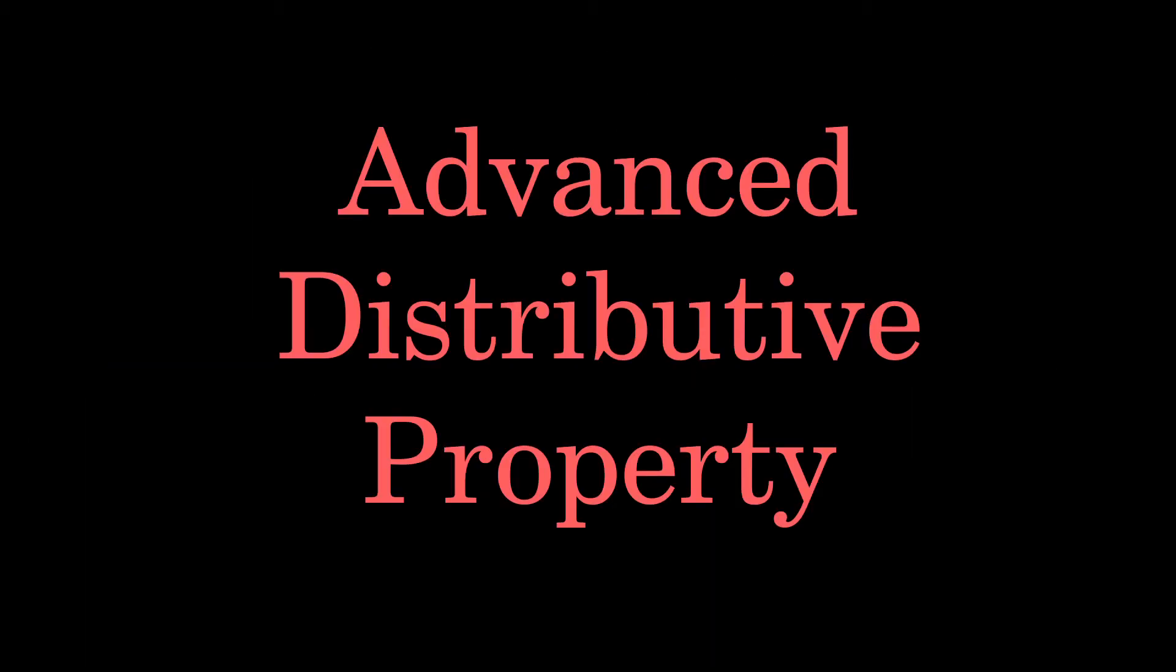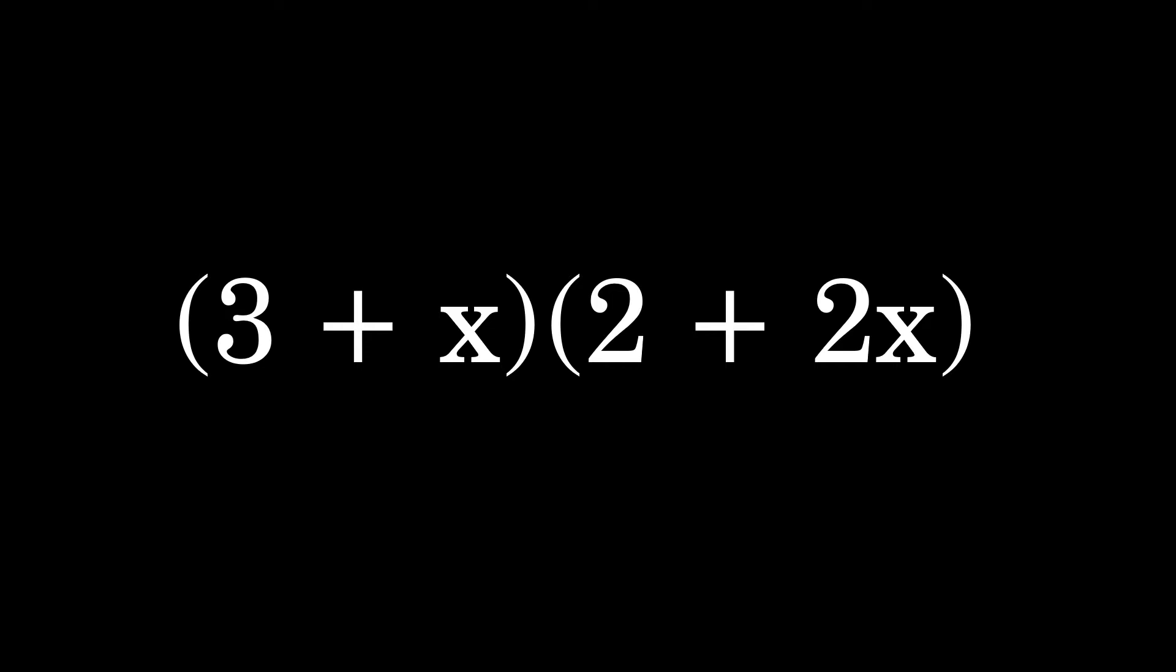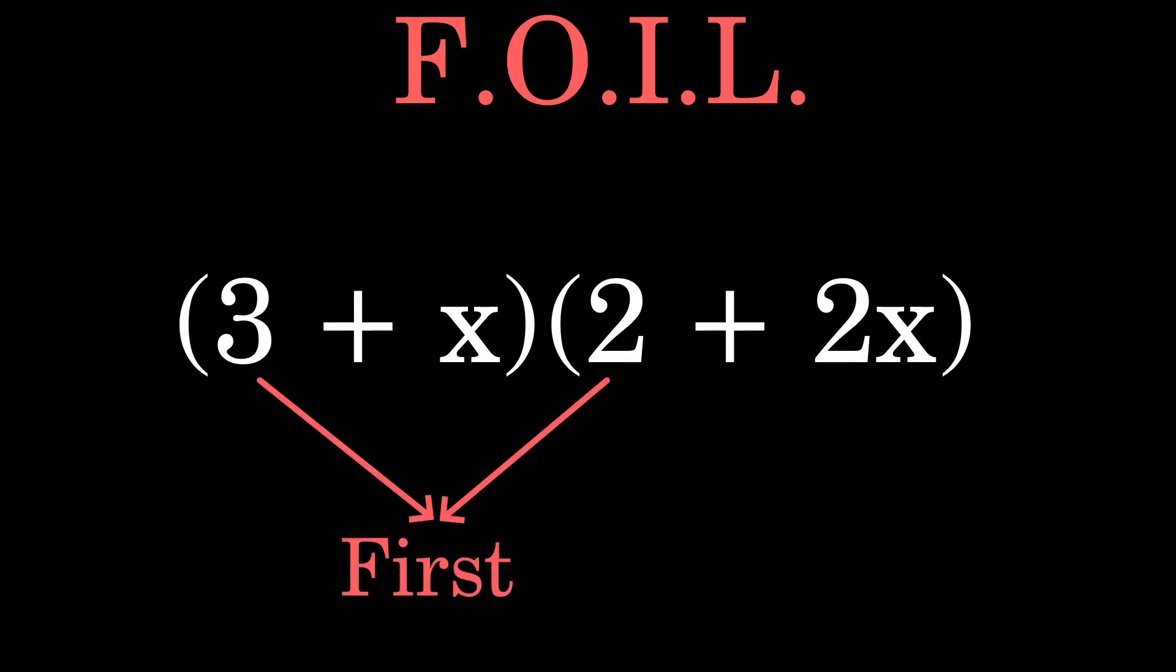The following section is a preview into how the distributive property can be taken further with greater applications. Let's distribute 3 plus x into 2 plus 2x. Where on earth do we even begin? Most people would resort to a method known as FOIL, which stands for first, outer, inner, and last.